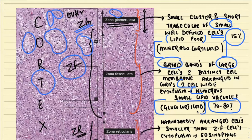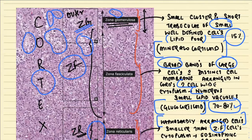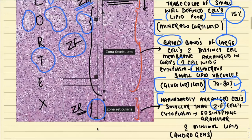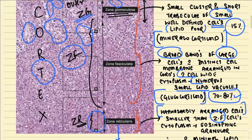The zona fasciculata is responsible for the secretion of glucocorticoids, that is cortisol. These cells are lipid-rich, which is why they have a clear appearance containing multiple small lipid vacuoles. The zona fasciculata comprises 70 to 80 percent of the cortex. Just inner to the zona fasciculata is the zona reticularis, which abuts the adrenal medulla. It is comprised of haphazardly arranged cells which are smaller than fasciculata cells but bigger than zona glomerulosa cells, with more eosinophilic granular cytoplasm and less lipid. The basic function of zona reticularis is secretion of sex steroids — androgens, estrogens, and progesterone.